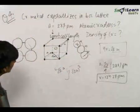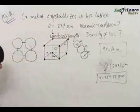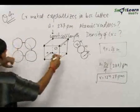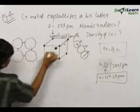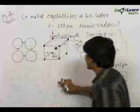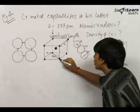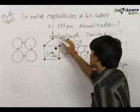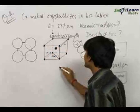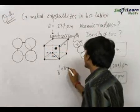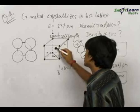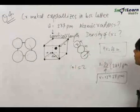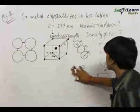Now we need to find the density of chromium. To find the density in any lattice, we first determine how many atoms are present inside the unit cell. Each corner atom contributes 1/8 to the unit cell, and there are 8 corner atoms, giving 1/8 × 8 = 1. The body-center atom contributes 1 fully. Therefore, the total number of atoms in a BCC unit cell is 1 + 1 = 2.